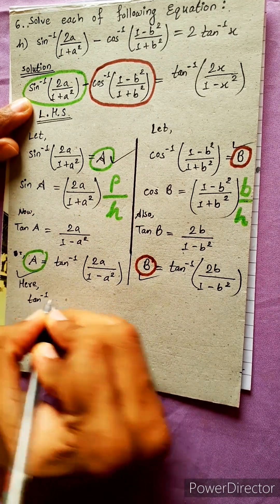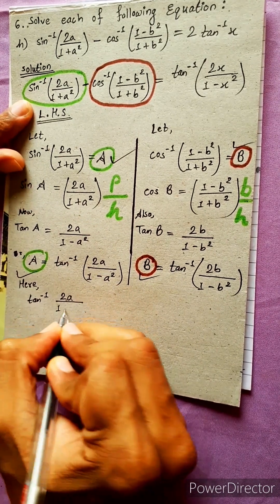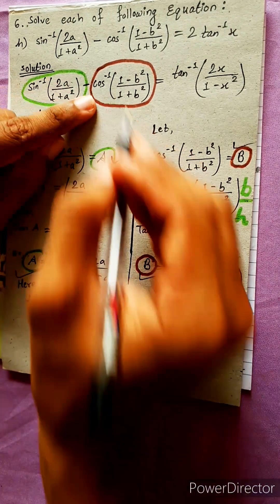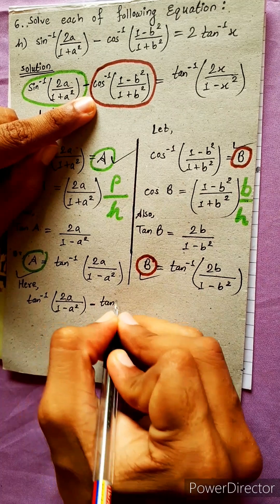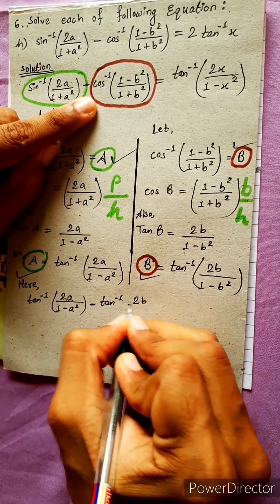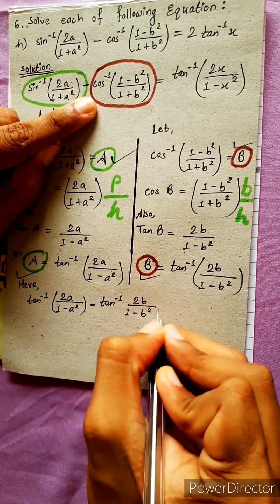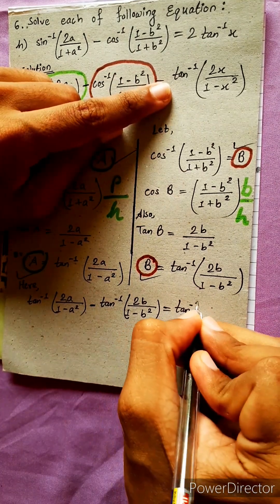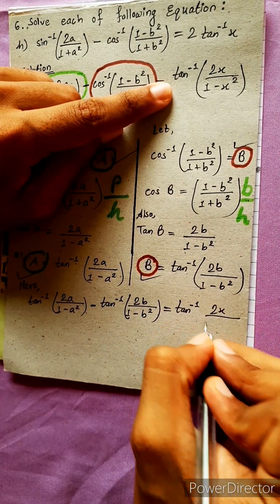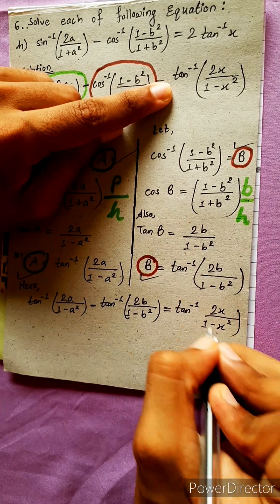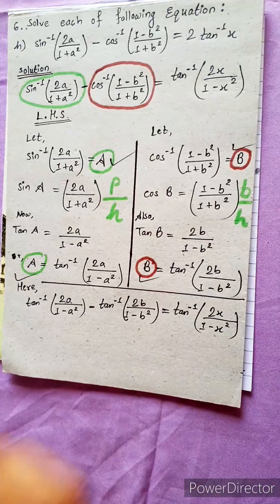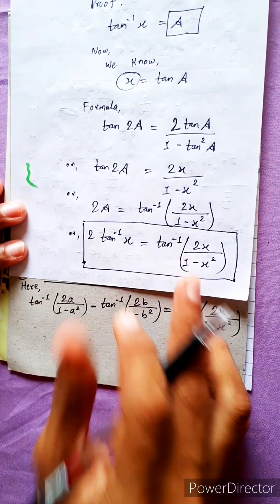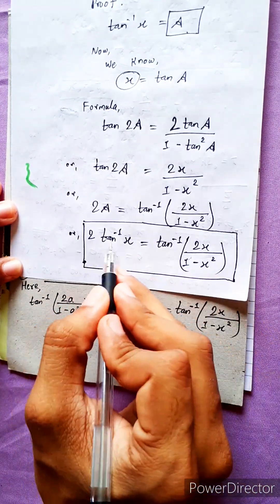Therefore, tan⁻¹(2a / (1 - a²)) and tan⁻¹(2b / (1 - b²)) are our expressions. Applying the formula: tan⁻¹(2x / (1 - x²)) equals 2·tan⁻¹(x). We use this concept — putting in x, we get 2·tan⁻¹(x) relating to 1 - x².